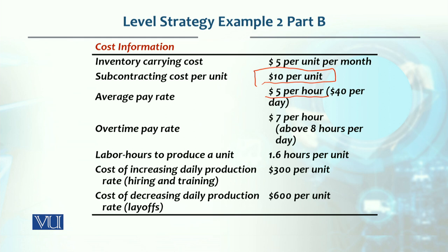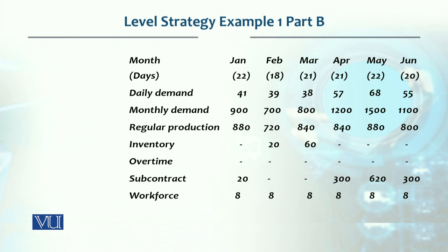Labor hours to produce is 1.6 hours per unit. Apart from this, hiring or layoff costs will not be utilized in this current plan we are discussing. In this chart, our regular production has been determined — what we can produce and what we will produce. The remaining shortfall we will meet through subcontracting.